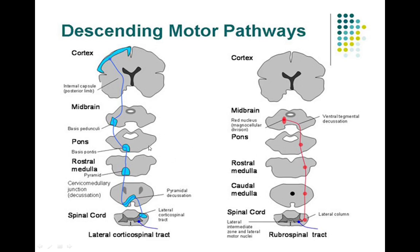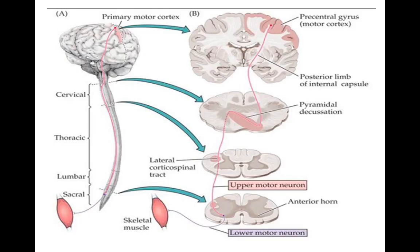The general features of all tracts — be it pyramidal or extrapyramidal — is that the tracts are made up of upper motor neurons and lower motor neurons. The pyramidal tracts are tracts originating from the motor cortex, the precentral gyrus, and then descend into the internal capsule. In the medulla, it forms a kind of pyramid — there is an elevation of the tracts that forms a pyramidal structure.